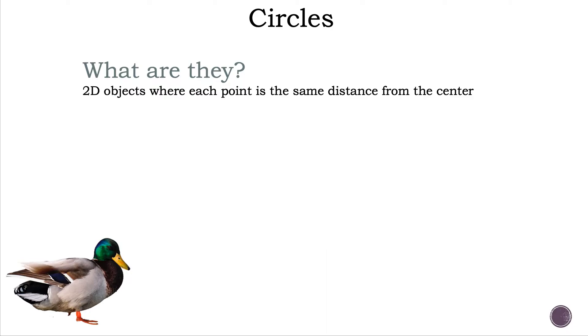Circles are 2D objects where each point is the same distance from the center. Circles are the perfect shape.